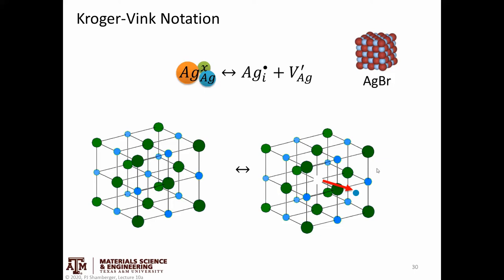We're going to continue talking about point defects today, and we're going to give some examples of how we write defects, and specifically how we write these defect equations. We write it using a notation that's called Kroger-Vink notation, named after the people who first developed it. And we're going to give an example in the silver bromide lattice.